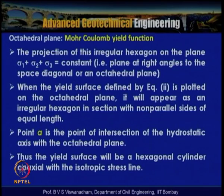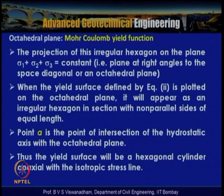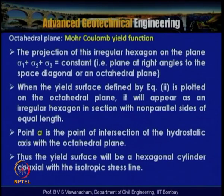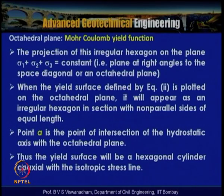The projection of this irregular hexagon on the plane σ₁ + σ₂ + σ₃ = constant (the octahedral plane, at right angles to the space diagonal) appears as an irregular hexagonal section with non-parallel sides of equal length. Point A is the intersection of the hydrostatic axis with the octahedral plane. Because of this, the yield surface is a hexagonal cylinder coaxial with the isotropic stress line.